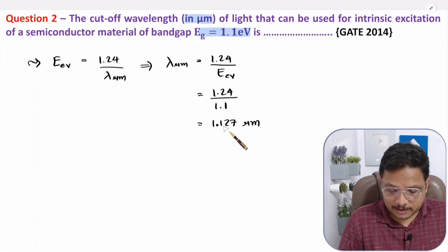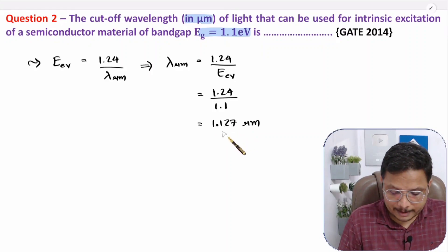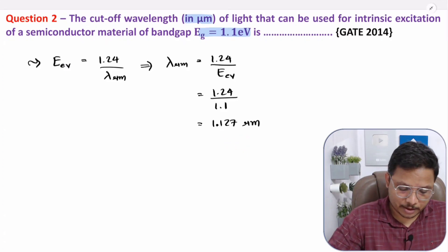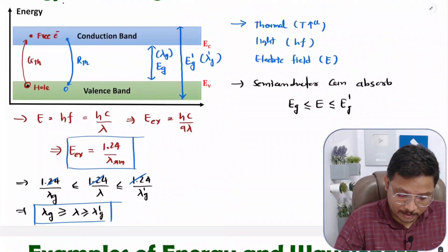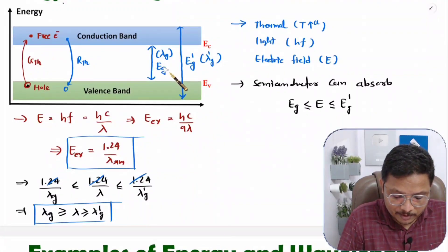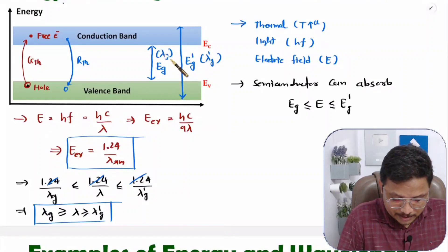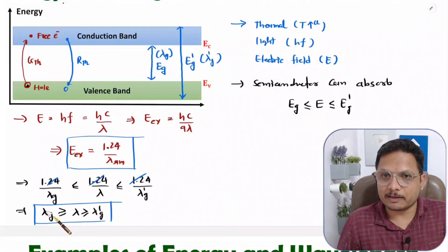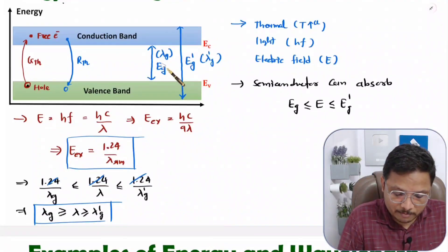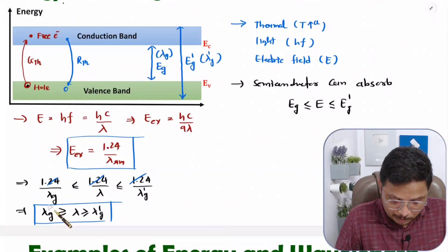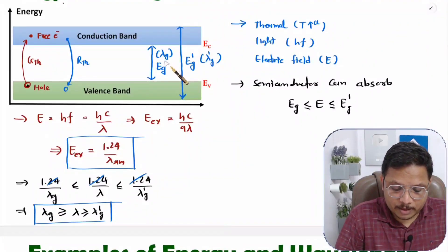This is the cutoff wavelength. Remember, cutoff wavelength means the highest wavelength. As I explained in the theory portion, when it comes to energy band gap, for electron motion you need to give minimum energy that is EG. With that, the wavelength will be λG, which will be the maximum wavelength. So with EG, the maximum wavelength is λG — that is the cutoff wavelength. Lower than this can also be absorbed.